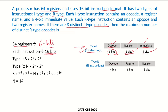For the R-type instruction, there is an opcode and 2 register names, each register requiring 6 bits. So 16 minus 6 minus 6 leaves 4 bits for the opcode.